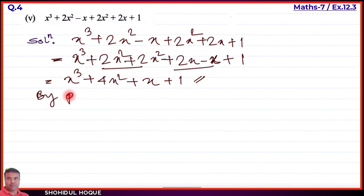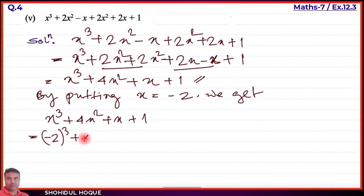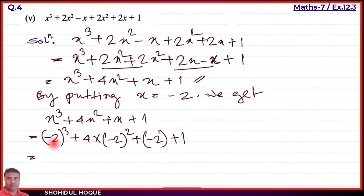By putting x equal to minus 2, we get the simplified expression x cube plus 4x square plus x plus 1. Substituting: (minus 2) cube, then plus 4 into (minus 2) square, then plus (minus 2), then plus 1. Minus 2 cube: minus 2 times minus 2 times minus 2 equals minus 8.